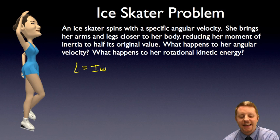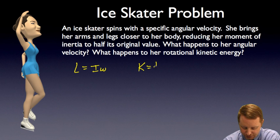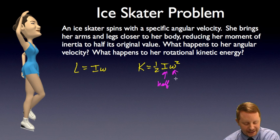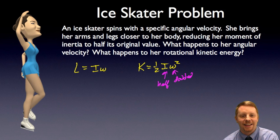Now, rotational kinetic energy on the other hand is governed by kinetic energy equals one-half I omega squared. If we have cut moment of inertia in half, and we have doubled angular velocity, which we had just determined, and that doubled is squared, we've got one-half times two squared, one-half times four. What we're actually going to end up doing is doubling her kinetic energy.